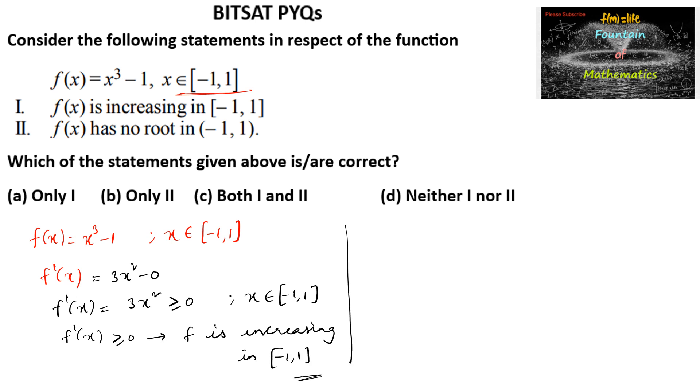Now, since this function is increasing, f of negative 1 we can write as minus 1 whole to the power of 3 minus 1, which is negative 2. And f of 1 is equal to 1 minus 1, which is equal to 0.